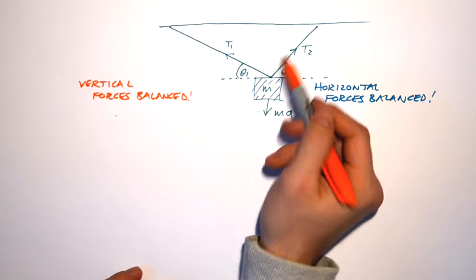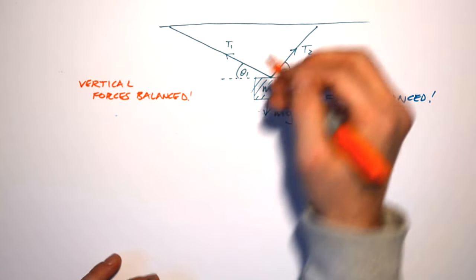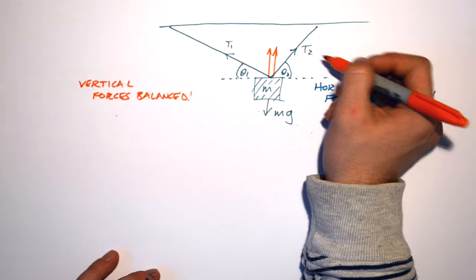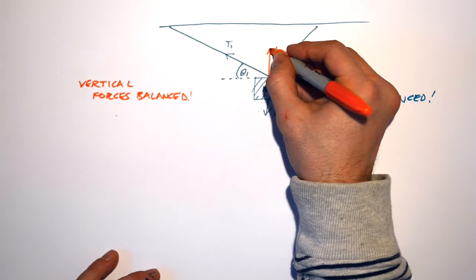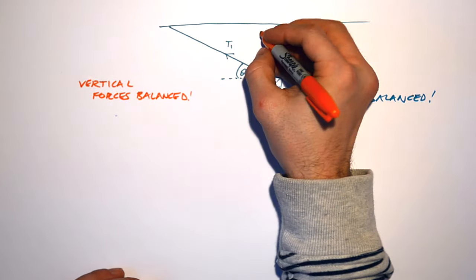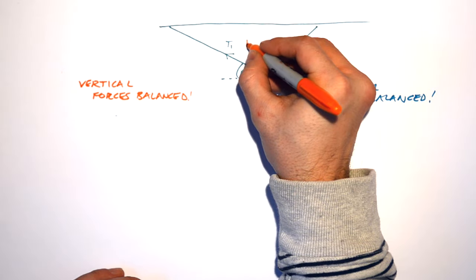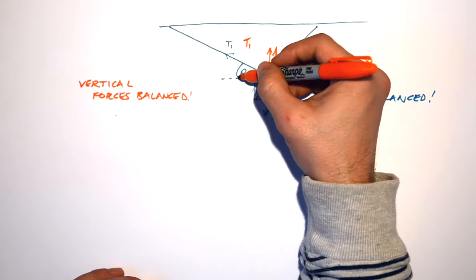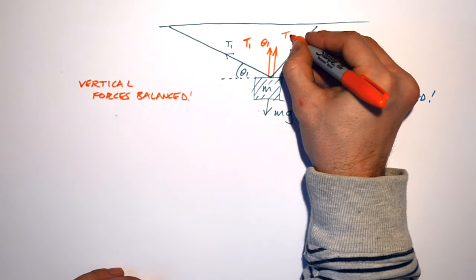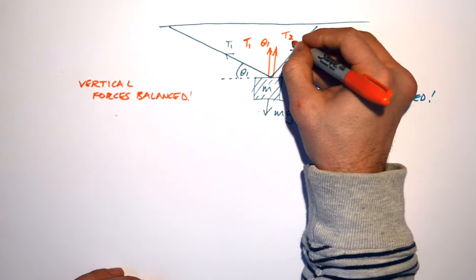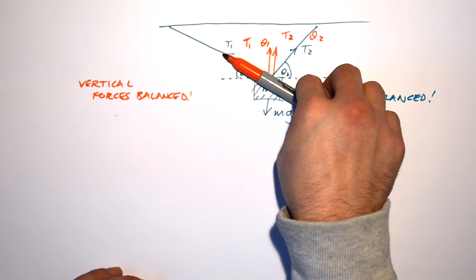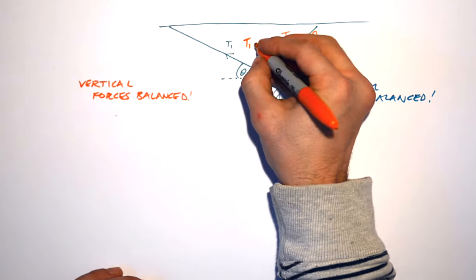Both T1 and T2 have a vertical component. Can I figure out how big they are? Yes — they're components, so they'll be smaller than T1 and T2. Using the easy vectors trick: we're turning away from the angle going from the resultant to the vertical component, so we use sine. The vertical component of T1 is T1 sin θ1, and the vertical component of T2 is T2 sin θ2.